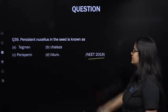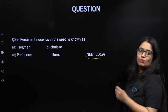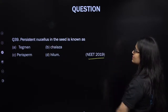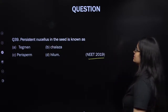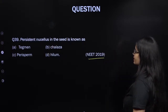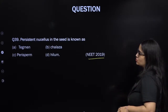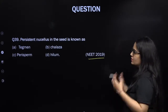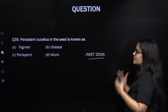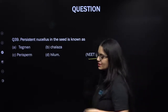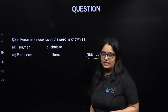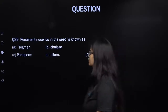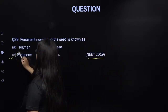From NEET 2019: persistent nucellus in the seed is known as perisperm. In some seeds like black pepper and beet, the nucellus remains persistent and is present in the seed as perisperm.